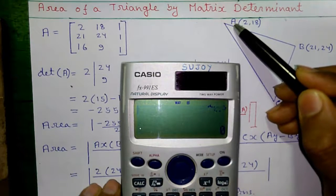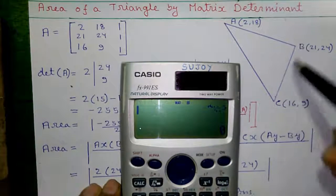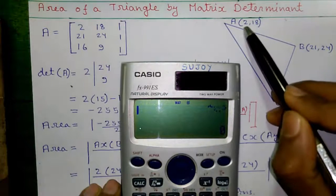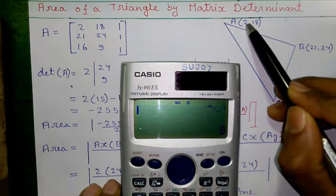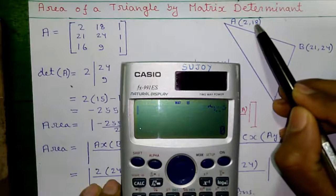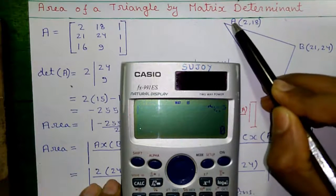This is our given triangle A having three vertices A, B and C. The coordinates are given. The first value represents X coordinate of vertex A. Second value represents the Y coordinate of vertex A.